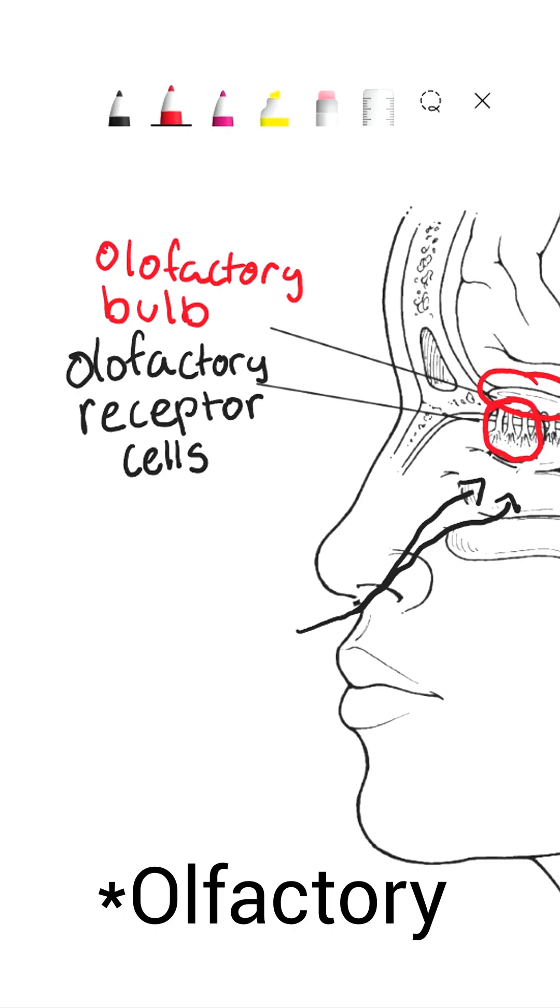From the olfactory bulb, the information is sent directly to the amygdala and the hippocampus, which is where memories are created.